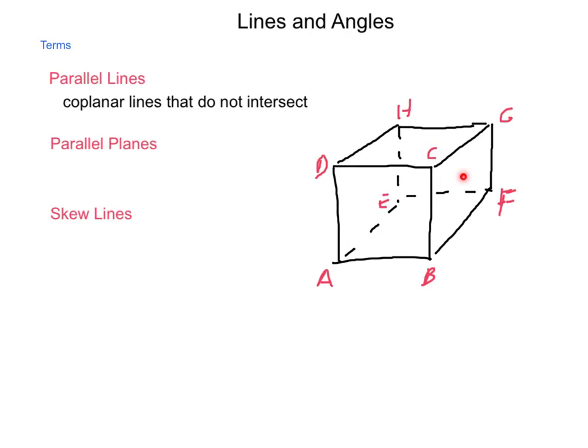We'll be talking a lot about parallel lines in this unit of study. Next, we have parallel planes. These are planes that do not intersect — similar to parallel lines, just extended to a two-dimensional system. So the top plane CDGH and the bottom plane ABFE would be parallel planes.